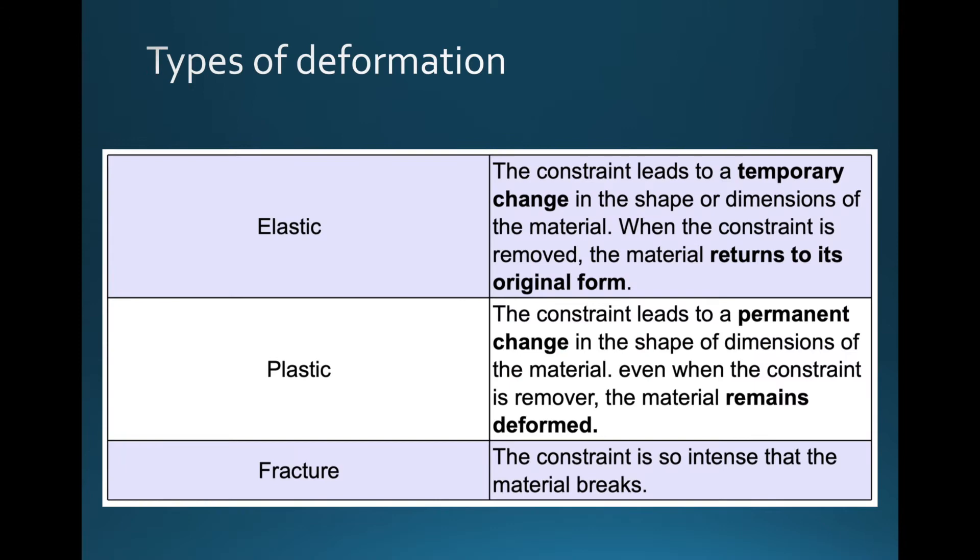First we'll look at the types of deformation: elastic, plastic, and fracture. Elastic - you know what an elastic looks like. Let's say it's made of rubber. You can stretch it, and if you let it go, it's going to go back to its original shape and size. The constraint leads to a temporary change in the shape or dimensions of the material, and when the constraint is removed, the material returns to its original form.